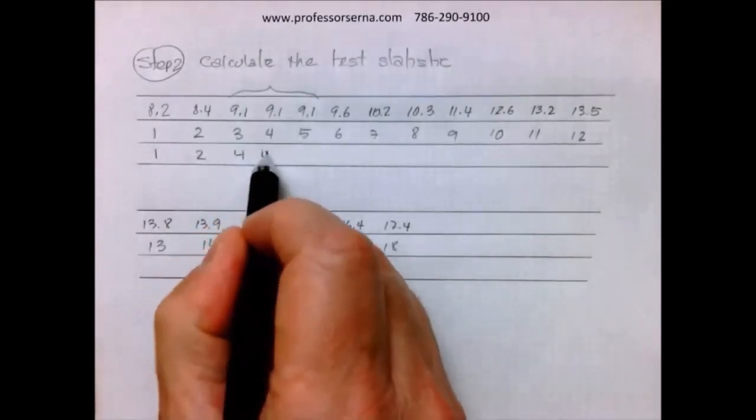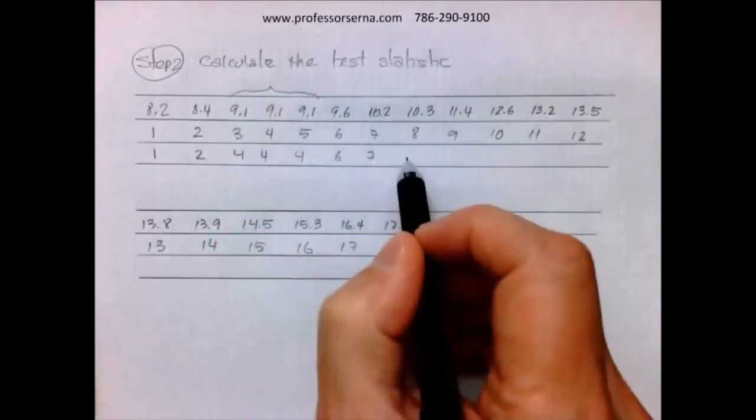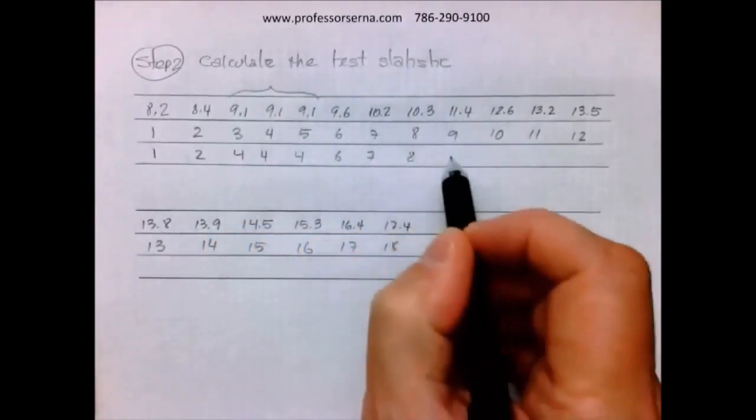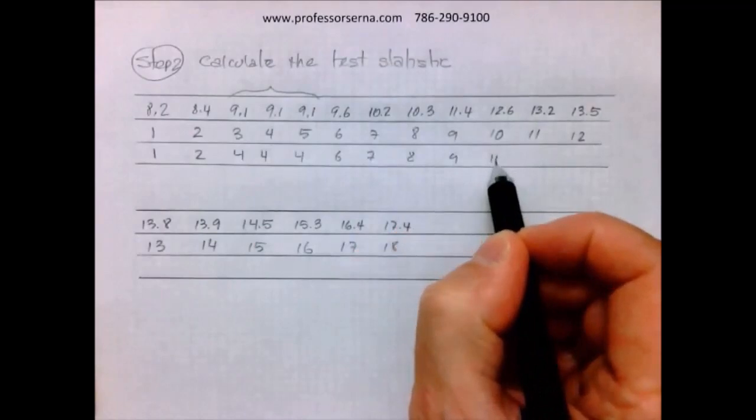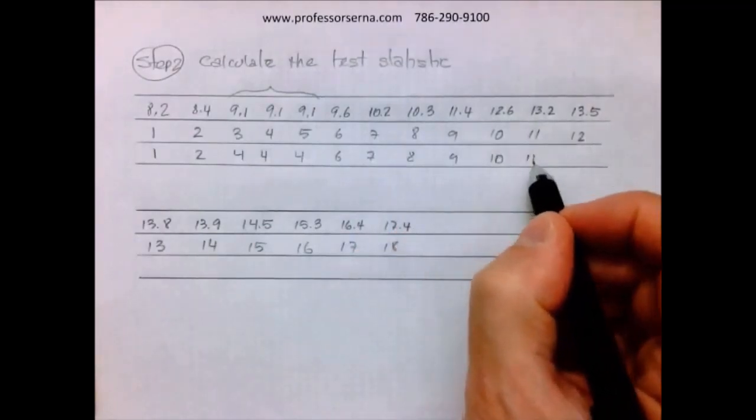So each one of them gets rank four. And this one will get rank six, seven. I don't see any more ties. Eight, nine, ten, eleven.